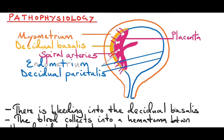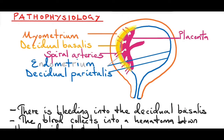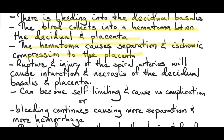Now let's look at the pathophysiology of abrupta placenta. Whatever the insult is, the initial problem is that there's bleeding into the decidua basalis. That blood collects into a hematoma between the decidua and the placenta. The hematoma will start to cause separation and ischemic compression to the placenta. Because of the separation of the placenta, some of the spiral arteries will get ruptured and injured. This will cause infarction and necrosis of the decidua basalis as well as the placenta, since the spiral arteries supply both.